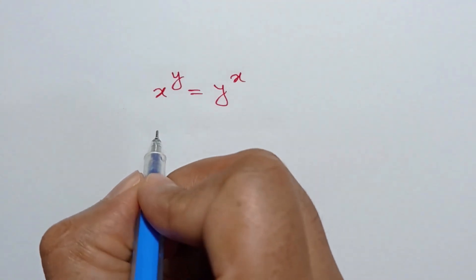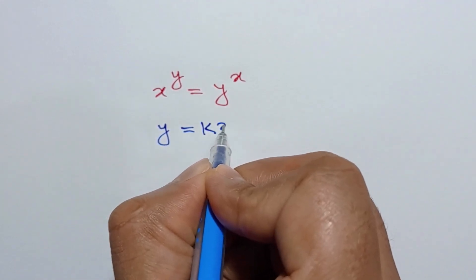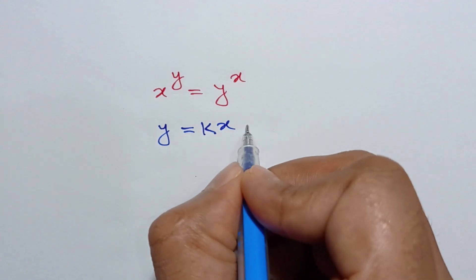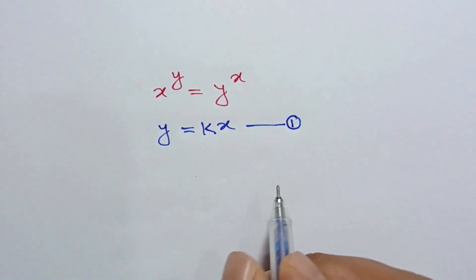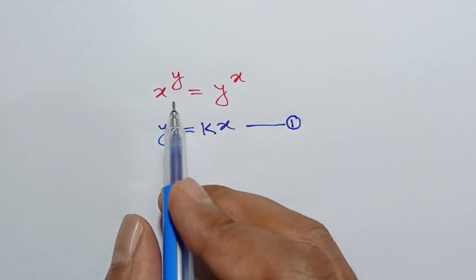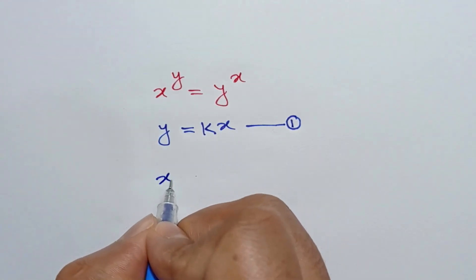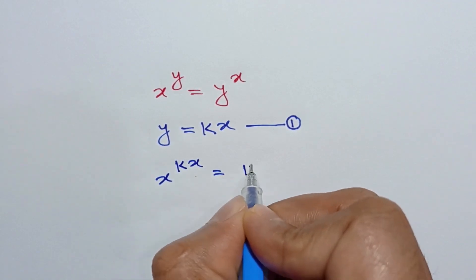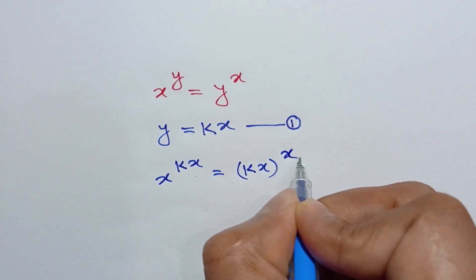Let's consider y is equal to kx, where k is constant, and call it equation number 1. Now substituting this value of y in this equation, we can write x to the power kx is equal to kx to the power x.